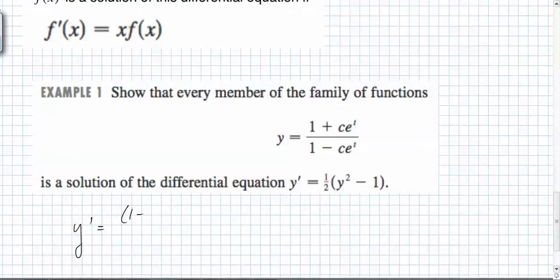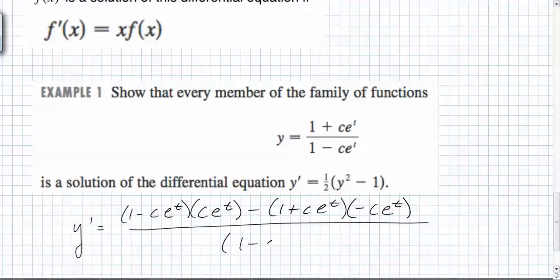So we get low, one minus c e to the, oh, c and e. So c e to the low, d high. What's the derivative of the top? c e to the low, d high, minus high. What's the derivative of the low? Negative c e to the t. So what do you have to do? And then what is it over? One minus c e to the t squared.